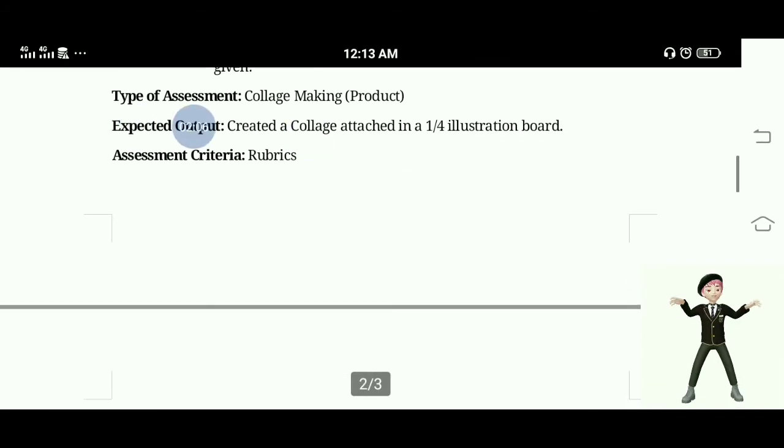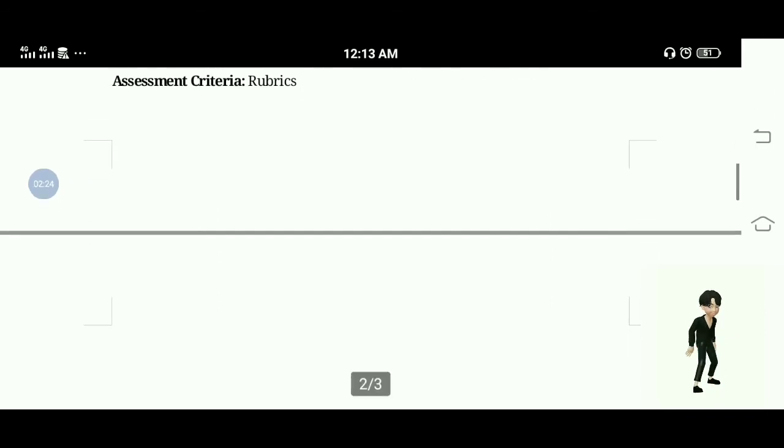Type of assessment: Collage Making. This is a product. Expected output: Created a collage attached in a one-fourth illustration board. Assessment Criteria: Rubrics. So we have rubrics here.